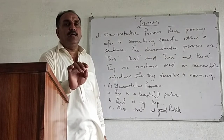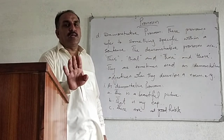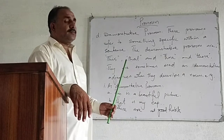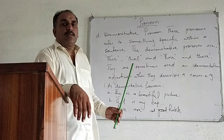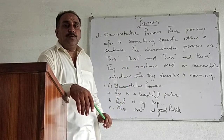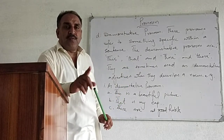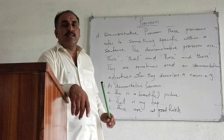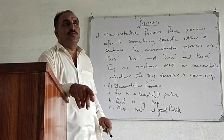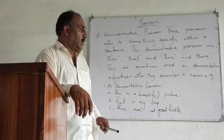This and that are singular; those and these are plural. That and those refer to a faraway thing, while this and these are used for near things.